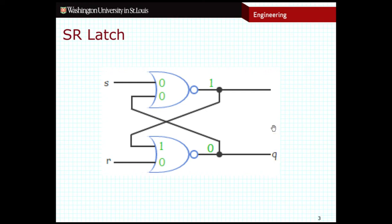You may have also noticed that this output up here that is not actually labeled is always going to be the opposite of Q. So this output is sometimes labeled as Q naught.